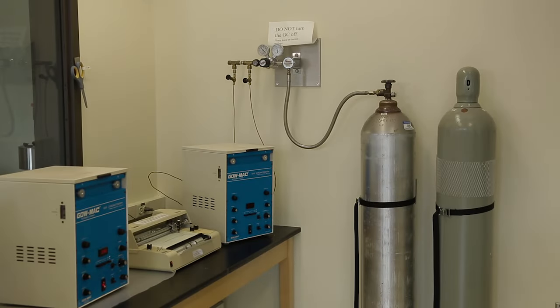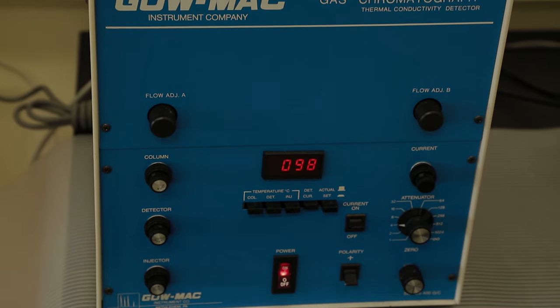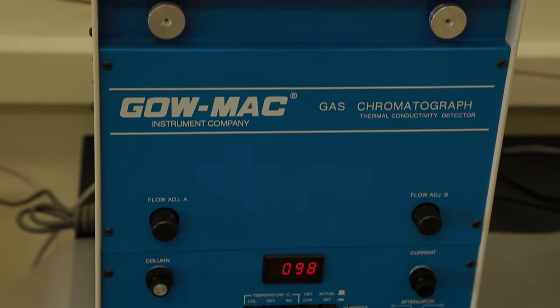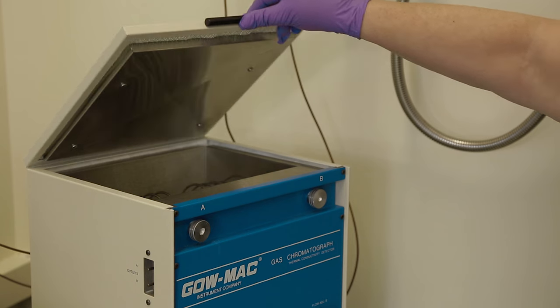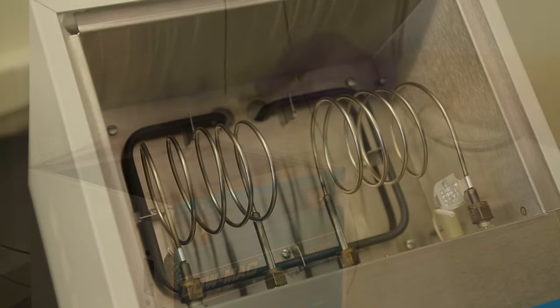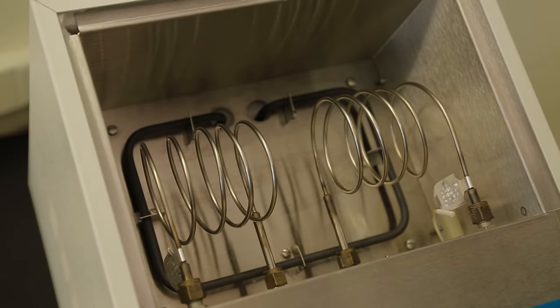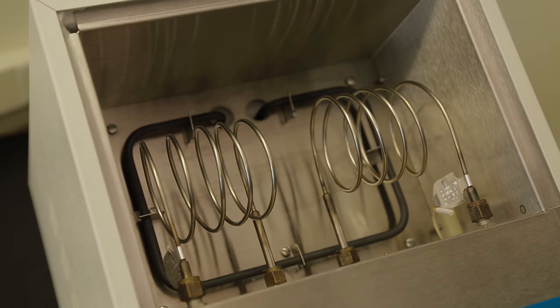To perform gas chromatography, often called GC, we use a gas chromatograph. A gas chromatograph is an instrument with a long column filled with small particles coated with a very thin layer of an adsorbent. This layer is the stationary phase of the column.